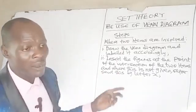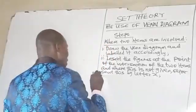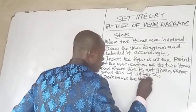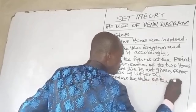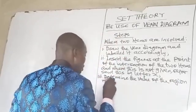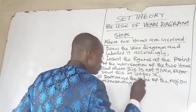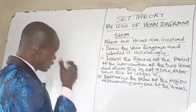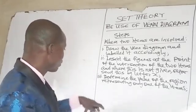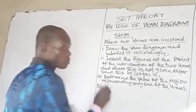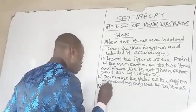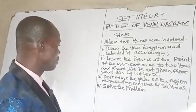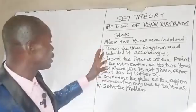Step three: determine the value of the region representing only one of the items. Step four: solve the problem using the Venn diagram. These are the steps you need to take when only two items are involved.